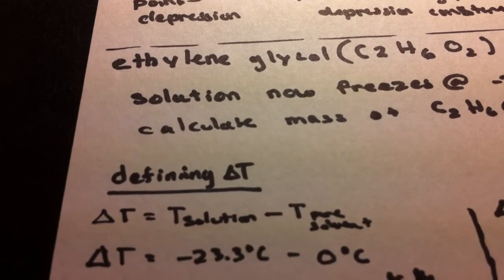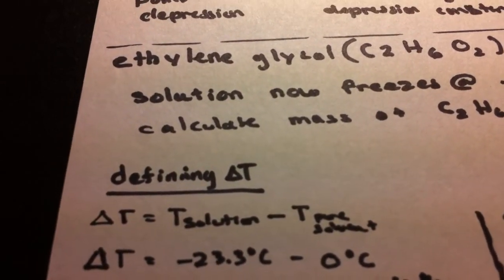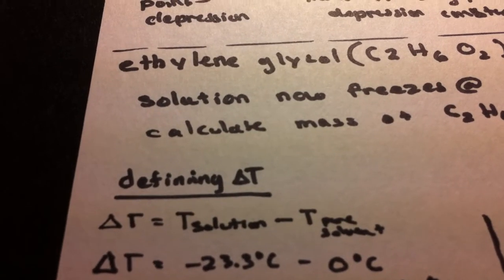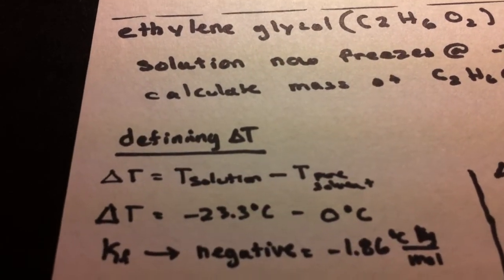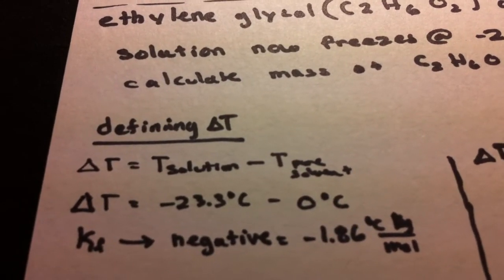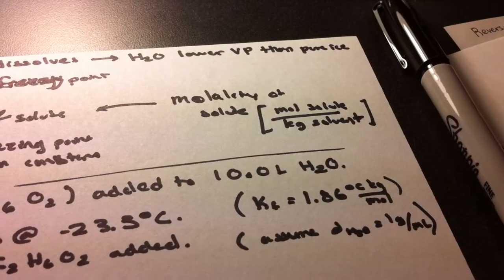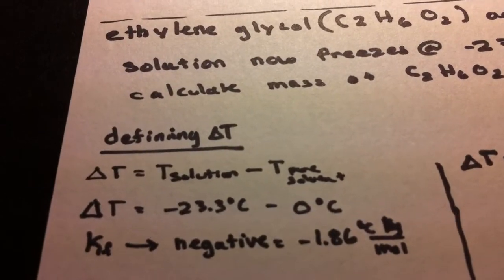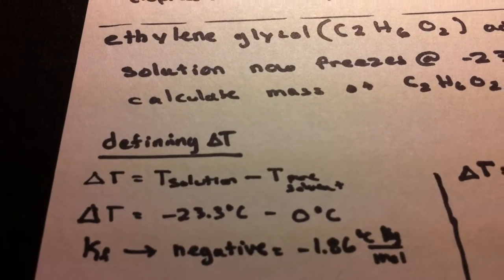But the problem is, because it's freezing point depression, delta T is going to come out as negative instead of positive. So because delta T is negative in this case, KF would also be negative. So instead of the KF being 1.86, it's actually going to be negative 1.86 instead.